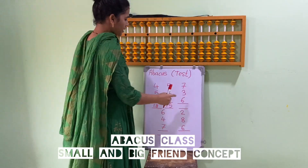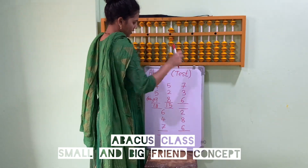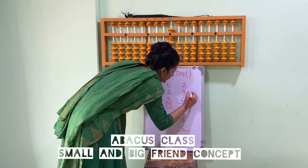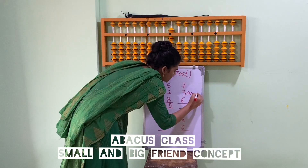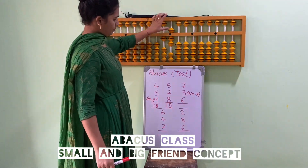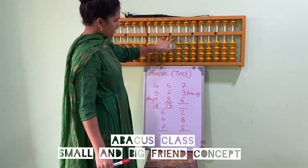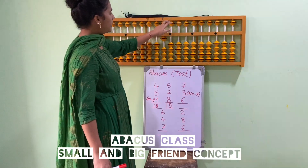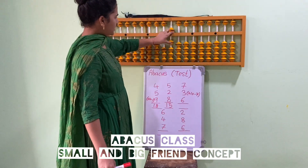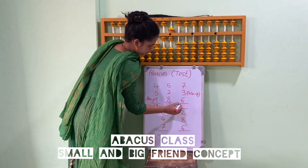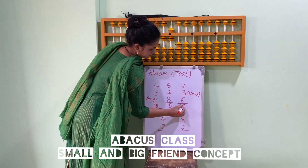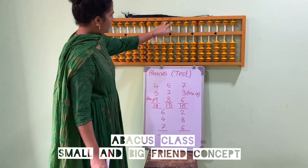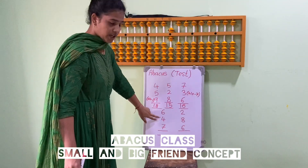Let's see another sum: 7, 5, 6, 7, plus 3. So what is the formula of plus 3? Plus 10, minus 7. Plus 10, minus 7. So the answer is 16.